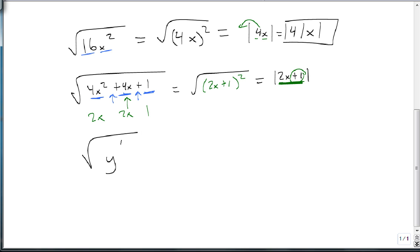Okay. What if we change the variable? What if we go y to the 6th? Well, is 6 a perfect square? Yes. What's it a perfect square of? 3. So this becomes the square root of (y³)², which is y³ inside of absolute values.